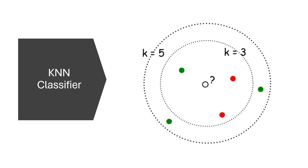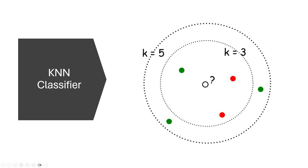In another example, we have three green dots and two red dots. When K is 3, the new dot falls in a smaller region based on distance, giving two red dots and one green — so red wins. But when K equals 5, it falls in a bigger region with three greens and two reds, so green wins. This shows how choosing different K changes the prediction, which is why K must be chosen very carefully.